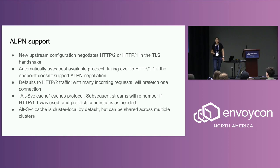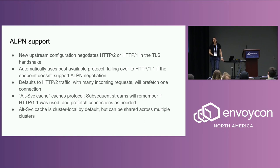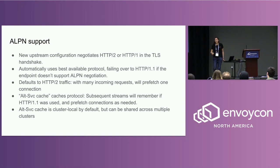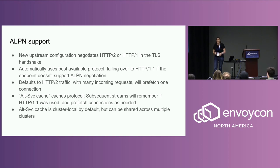Envoy defaults to assuming your endpoint is going to use HTTP2. So on a cold start, if it hasn't talked to an endpoint before and you have a flux of incoming requests, it will try to establish one TCP connection assuming various streams can be served over one connection. However, we didn't want a latency penalty if that endpoint supported HTTP1, where you can only serve one request per connection at a time. So we added what we call the alternate service cache, which caches that protocol. Subsequent streams will remember that HTTP1.1 was used and prefetch one connection per incoming request. This alt service cache is cluster-local by default, so customer cluster data is completely isolated, but you can easily configure different clusters to share this cache if desired.